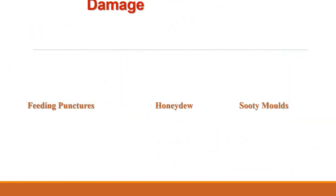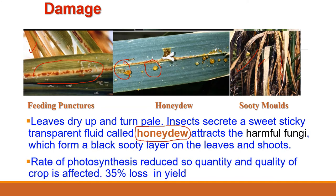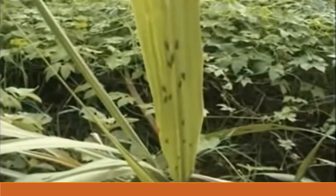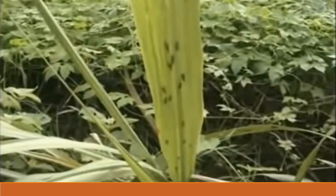Both nymphs and adults damage the plant by sucking the cell sap of the succulent leaves, causing leaves to dry up and turn pale. The insects produce honeydew, which attracts harmful fungi forming a black sooty layer on leaves and shoots, retarding photosynthesis. Quality and quantity of crop is affected; there is about 35% loss in yield. Pyrilla is a major pest in Bihar, Delhi, Haryana, Punjab, Madhya Pradesh, Uttar Pradesh, Maharashtra, Gujarat and Orissa, and in recent years its incidence has increased in peninsular India also.